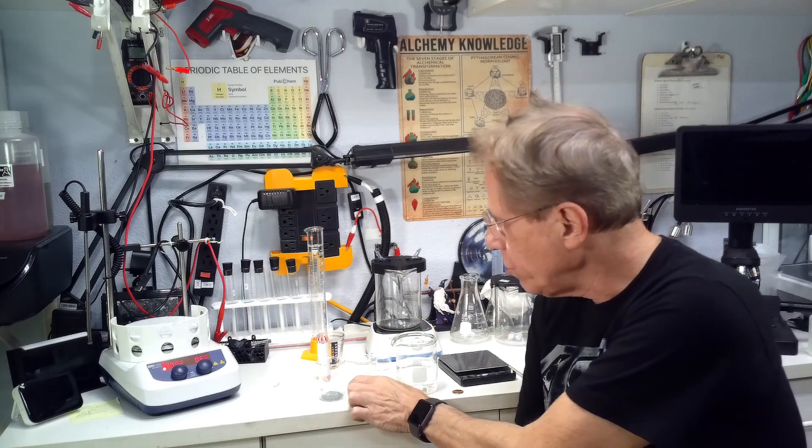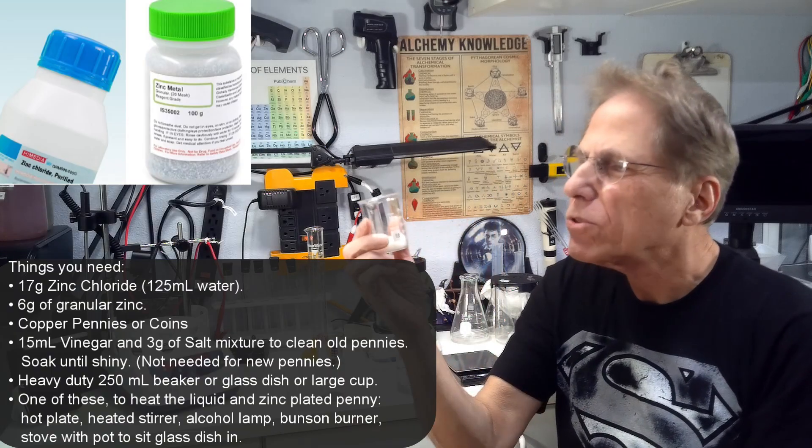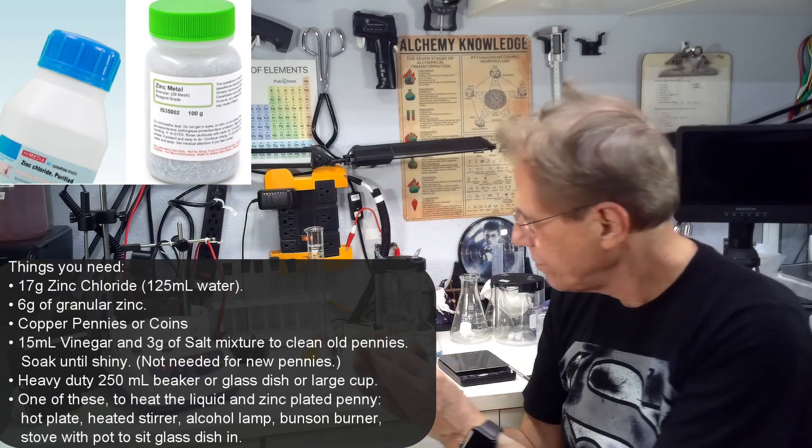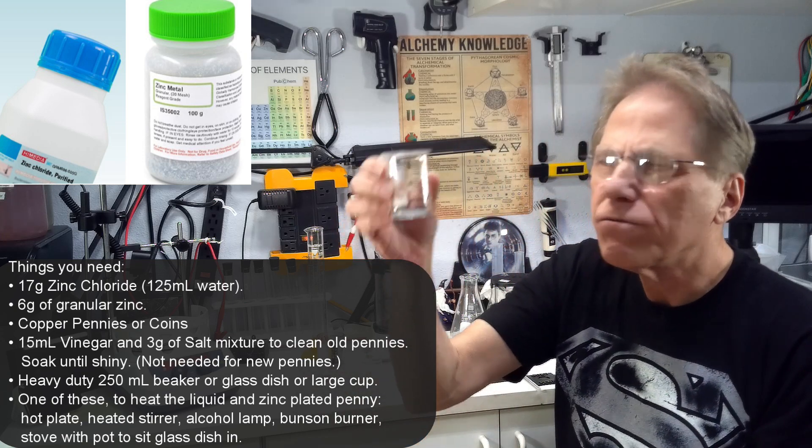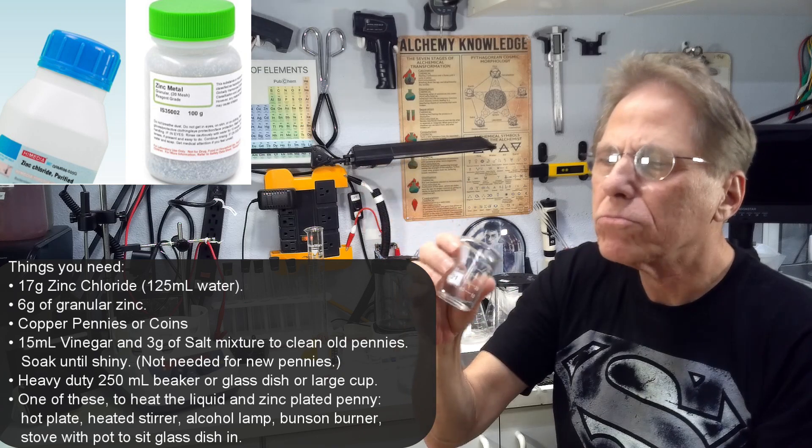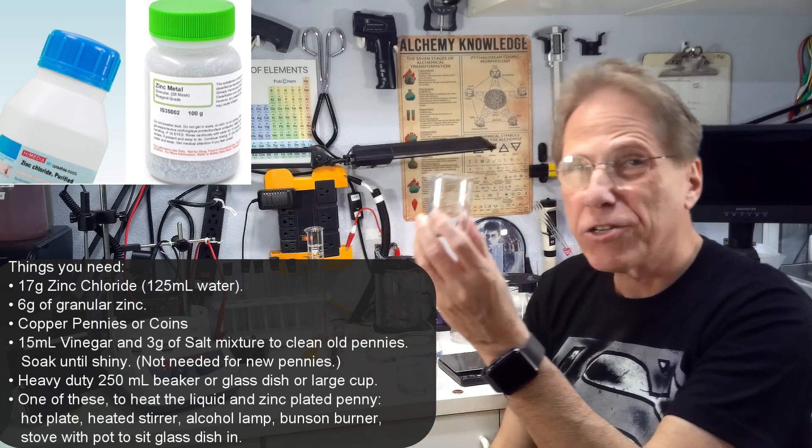To accomplish this magical process, we're going to use some chemicals. We're going to use 17 grams of zinc chloride. We're also going to use 6 grams of zinc granules, dust, basically ground up zinc.